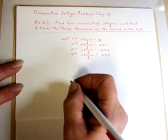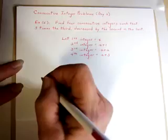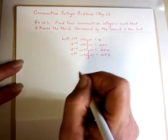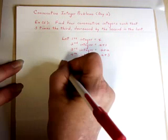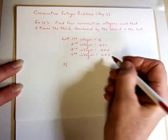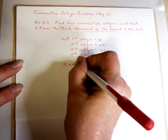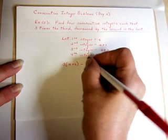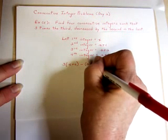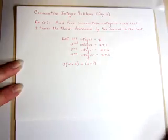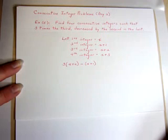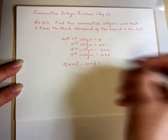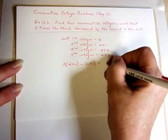Now go back to the first sentence of the problem and let's try to set up an equation. Find four consecutive integers such that three times the third, the third number is x plus 2. Decreased by is minus the second number, which is x plus 1, and it must be inside parentheses so that the entire x plus 1 is being subtracted. Is the last, so that's equals the last number, which is x plus 3.